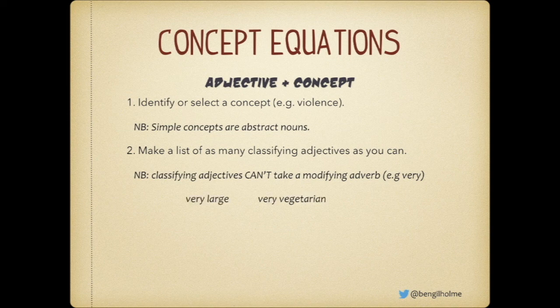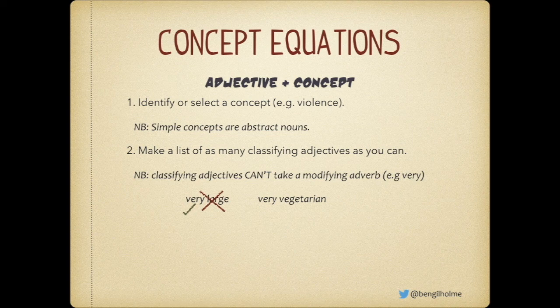We've got two concepts and both of them have a modifying adverb in front of them. The first one is 'very large' and the second is 'very vegetarian.' You can have something that's very large, so that means 'large' isn't a classifying adjective. But 'very vegetarian' — something is either vegetarian or it's not. There's no in between, because a little bit of meat means it's no longer vegetarian. So you can't use 'very' in front of vegetarian, which means vegetarian is a classifying adjective we can use for these concept equations.